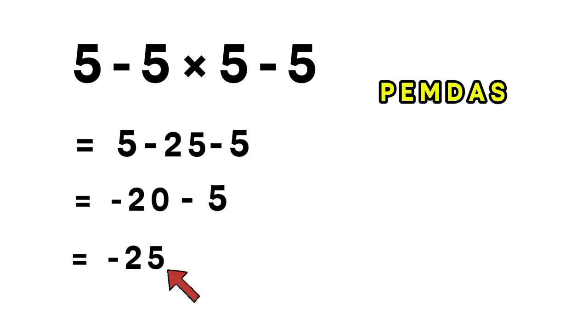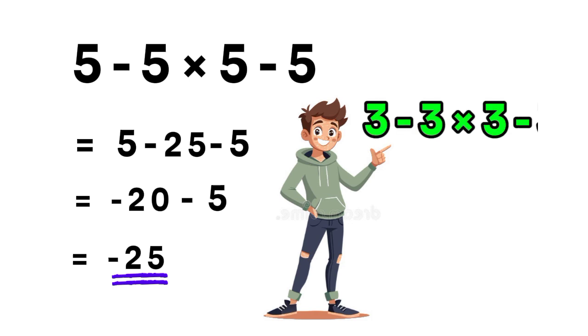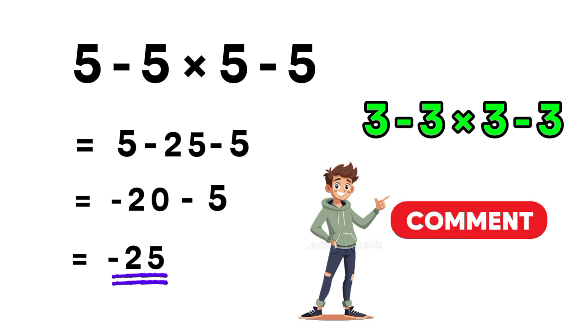So the correct answer is negative 25. Now, try this one for yourself: what is 3 minus 3 multiplied by 3 minus 3? Write your answer in the comments — let's see who gets it right.